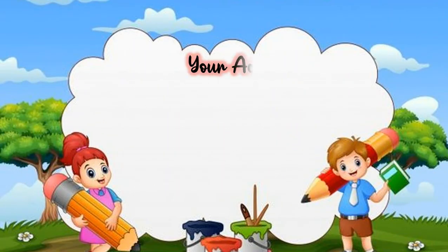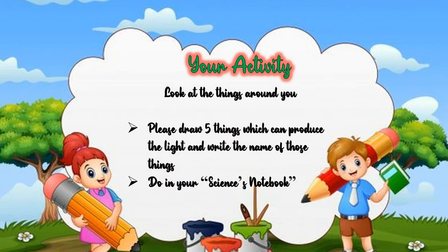That's all, students — we have studied about light source. Now it's time for you to do the exercise. Your activity is: look at the things around you, draw five things which can produce the light, and write the name of those things. Do it in your science notebook. Jadi tugas kalian adalah melihat benda-benda di sekitar kalian, gambarlah lima benda yang bisa menghasilkan cahaya, dan tuliskan namanya di buku tulis.